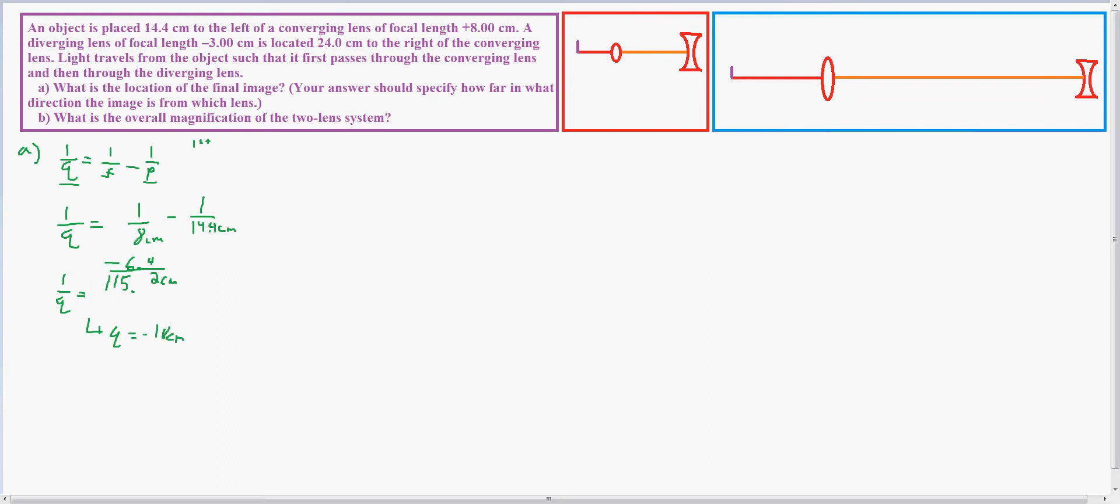And that 18 centimeters is behind the object, so I'm drawing these rays from here. This will be 18 centimeters, this will be 24 centimeters total in length. The focal point on this is 8 centimeters, and it goes down, hits that, goes across, and the new image will be right there. That's actually going to be the image created by this lens.